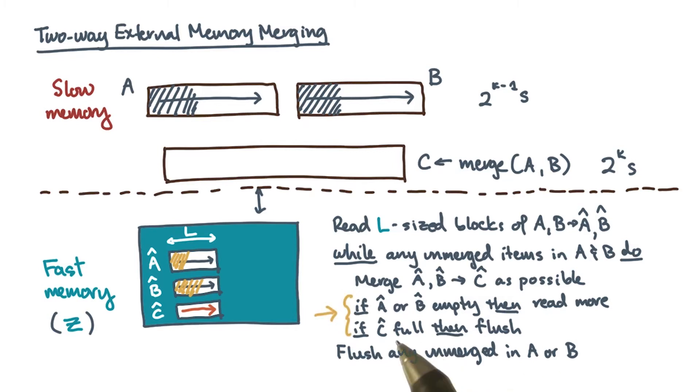If you empty A-hat or B-hat, just read more elements from slow memory. If you fill C-hat, flush the result to slow memory and empty C-hat. Finally, if you exhaust A or B, just copy the remaining elements from B or A.